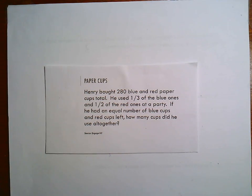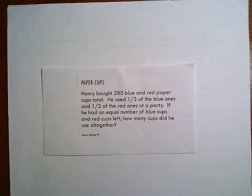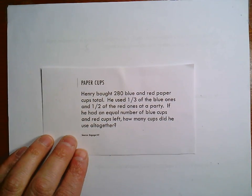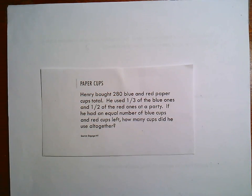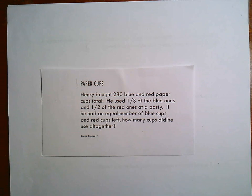Let's take a look at this problem — this is a nice one where tape diagrams work pretty well. Henry bought 280 blue and red paper cups. We can't assume they're half and half. He used one-third of the blue ones and half of the red ones at a party, and he has an equal number of blue and red cups left. So how many cups did he use altogether?